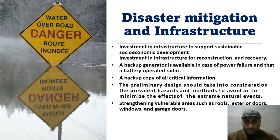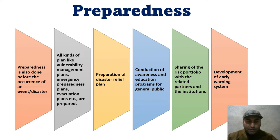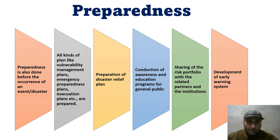The second component is preparedness, which is also done before the occurrence of a disaster. In the pre-disaster phase there are three activities: preparedness, mitigation, and prevention. Preparedness involves measures by which we prepare for certain hazards, including vulnerability management plans, emergency preparedness plans, and evacuation plans.